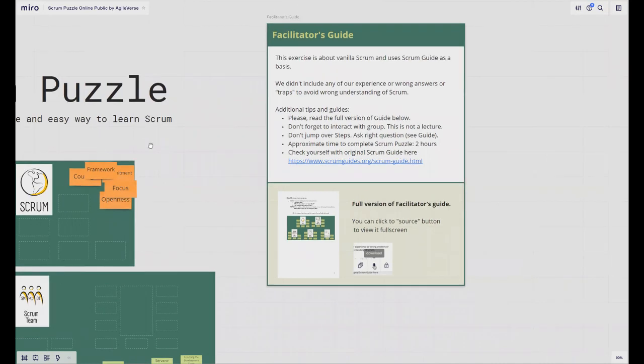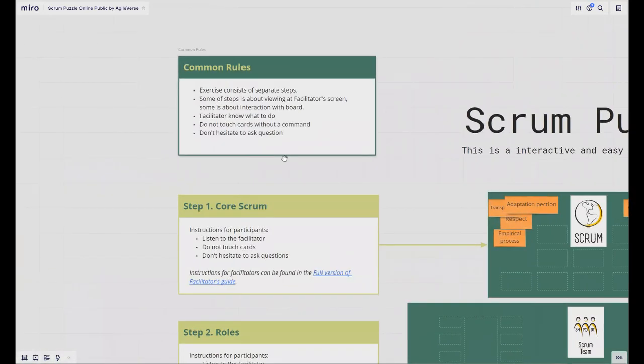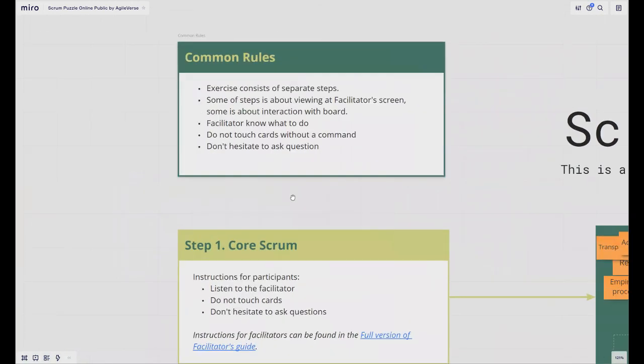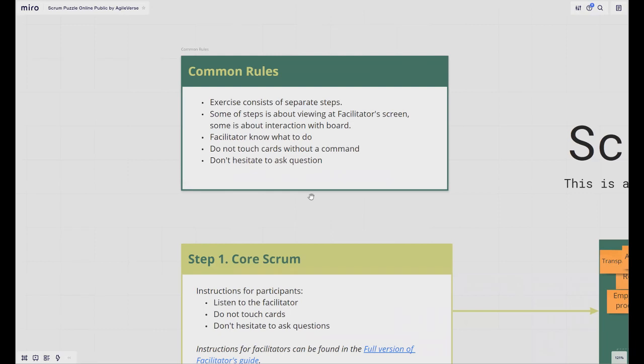Let's go to the common rules section of the exercise. It's on the left side of the board and it has common rules for the game that are applicable for all steps. For example, it's focused on that facilitator is driving this exercise, and all students may ask questions at any time. Most of the steps are described in facilitator's guide. That's most of the common rules.